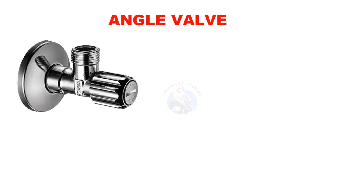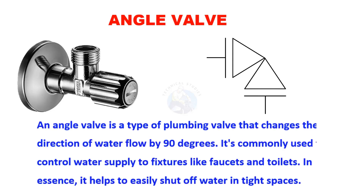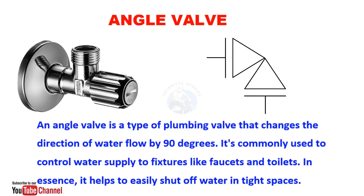An angle valve is a type of plumbing valve that changes the direction of water flow by 90 degrees. It's commonly used to control water supply to fixtures like faucets and toilets. In essence, it helps to easily shut off water in tight spaces.